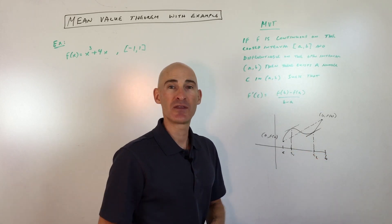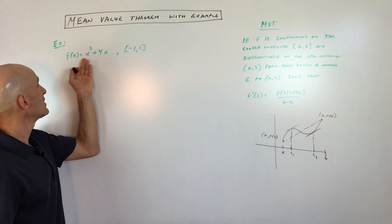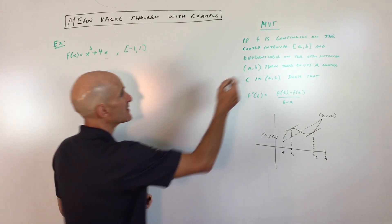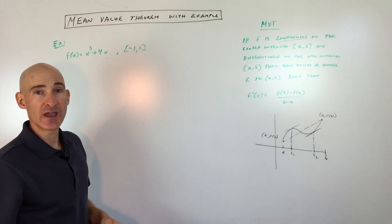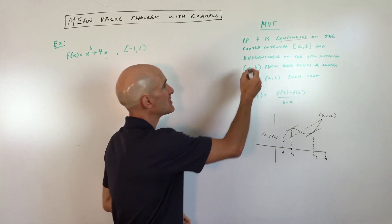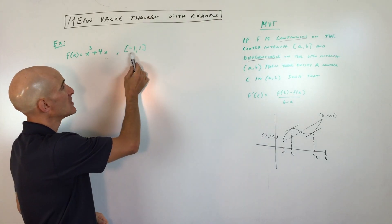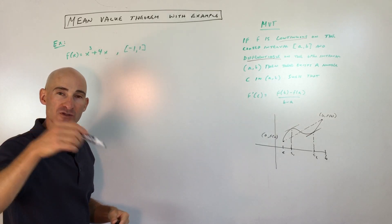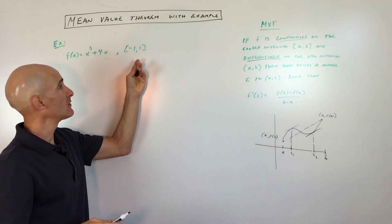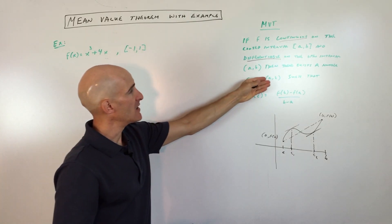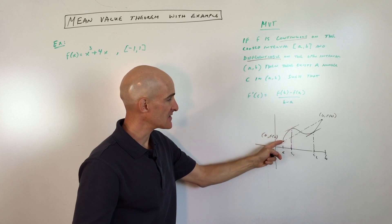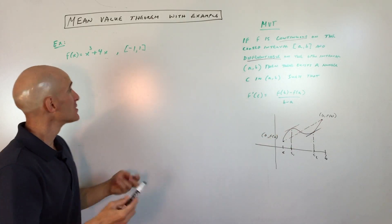Let's look at an example. The function is x cubed plus 4x, and we're looking at the interval from negative 1 to 1. First, does the mean value theorem apply? Is the function continuous? We know this is a polynomial, and polynomials are continuous — they don't have any breaks. Is it differentiable? Polynomials are smooth, no corners or cusps, so we can take the derivative at any point along the curve, including between negative 1 and 1. There must be a c value in between where the instantaneous rate of change equals the average rate of change between the two endpoints.